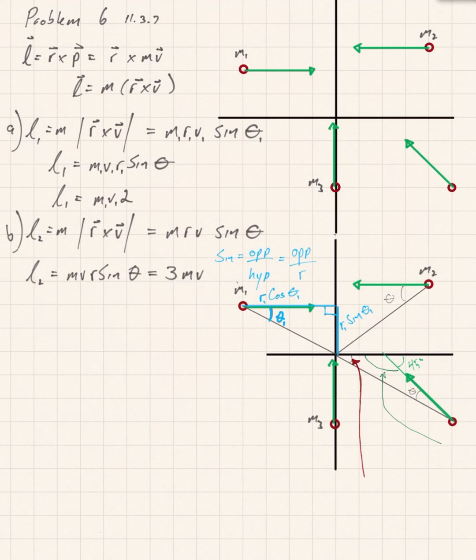Looking at the graph, you see that r2 sine theta 2 will be equal to three units. So r sine theta is equal to three and the result is 3mv.